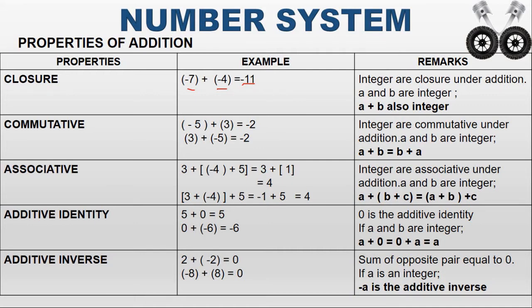Whenever I add two integers, the answer is also an integer. The second property is commutative. What does commutative mean? If A and B are integers, then A plus B equals B plus A — that is the reverse format. Whenever I add in the reverse format, that is also true. For example, minus 5 plus 3: minus 5 is a negative integer and 3 is a positive integer. When I add these two integers, the answer is minus 2.